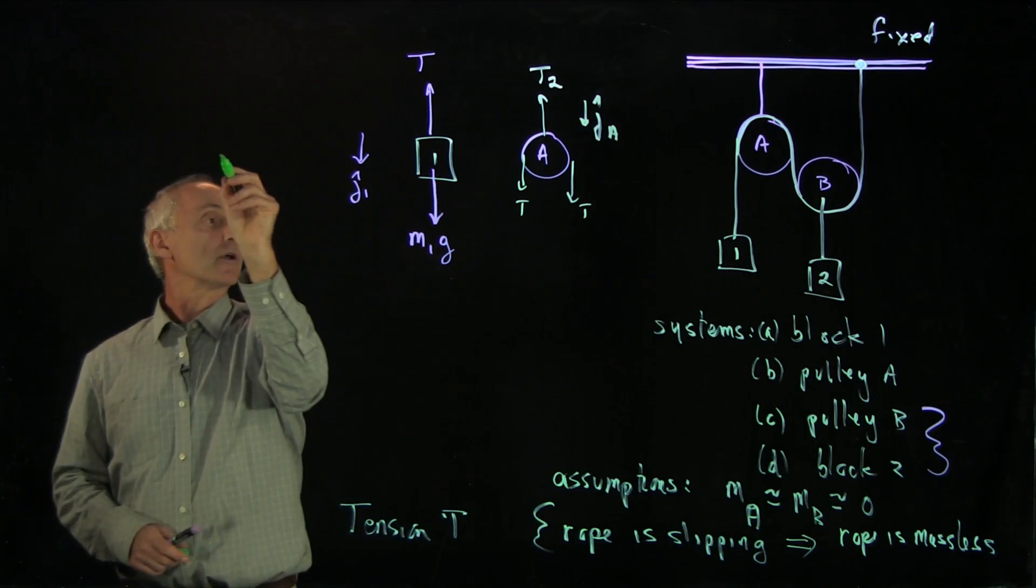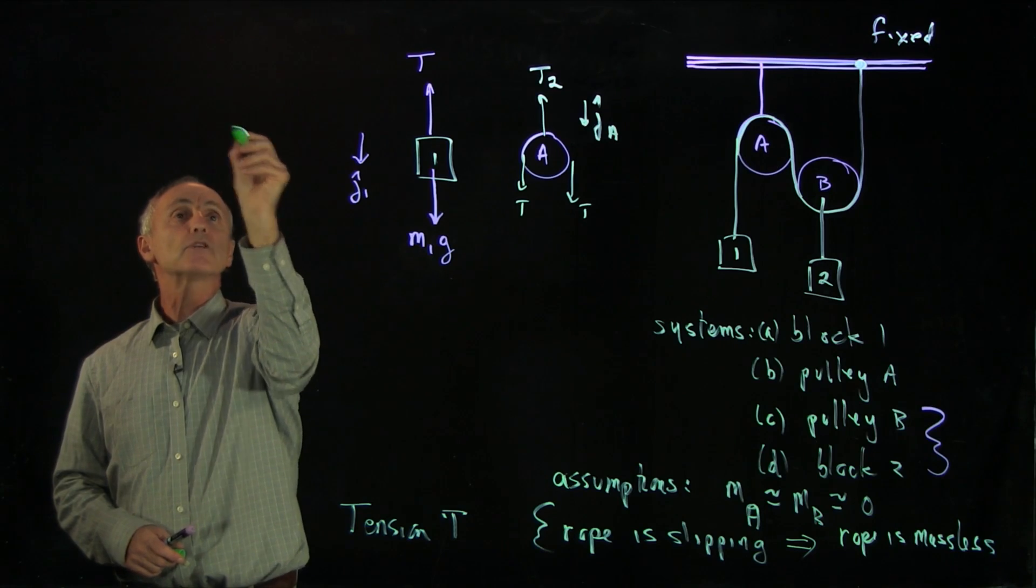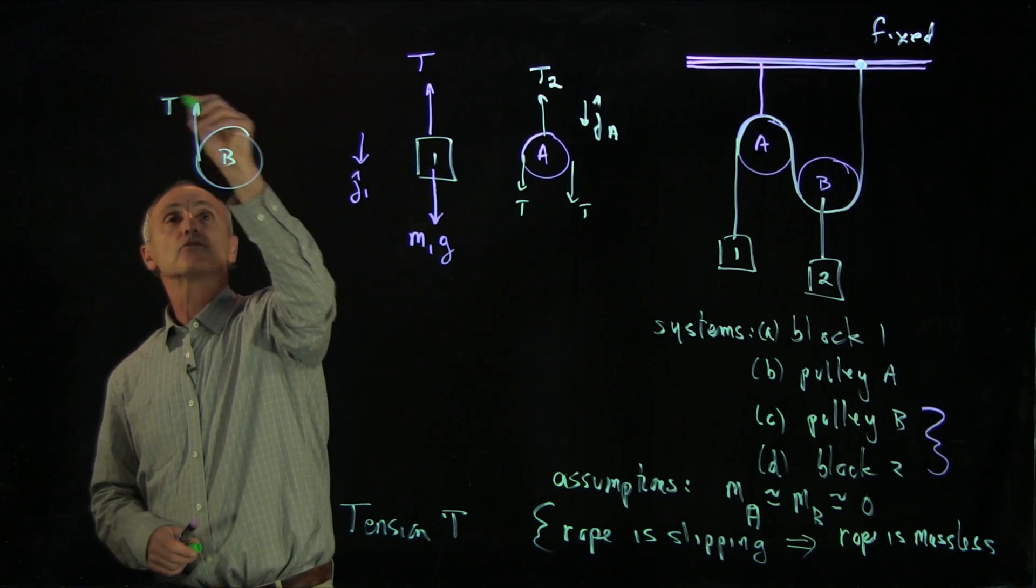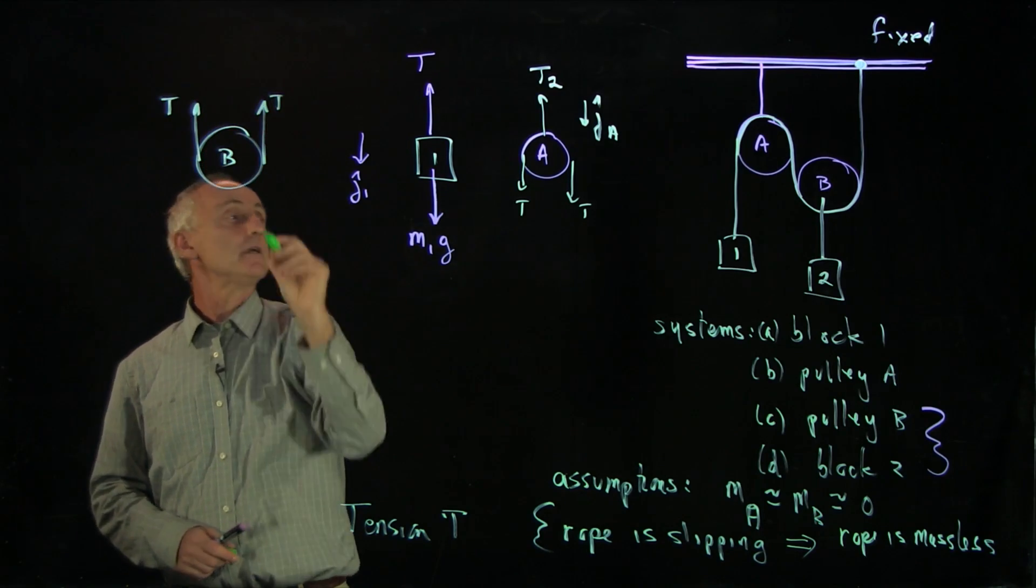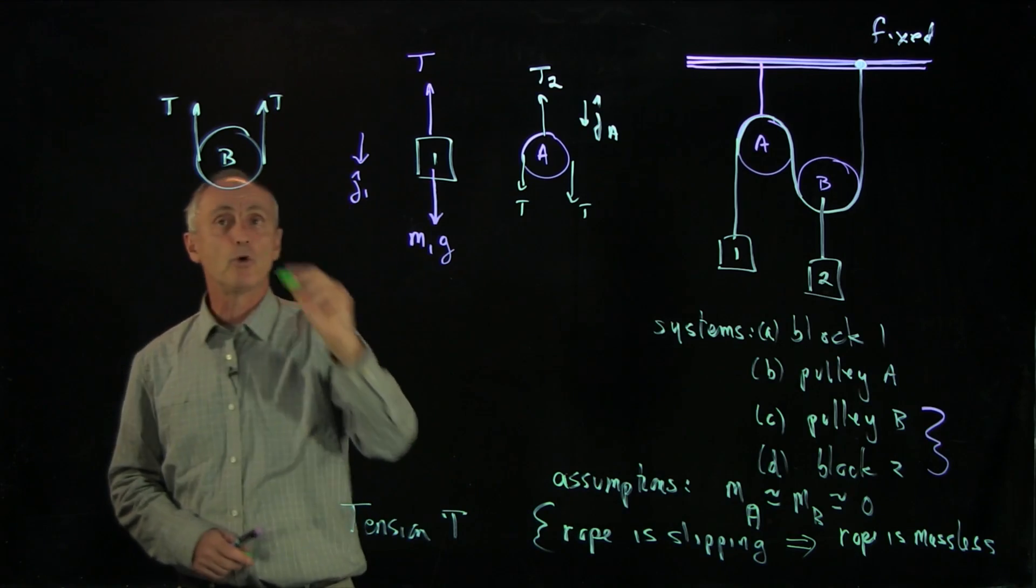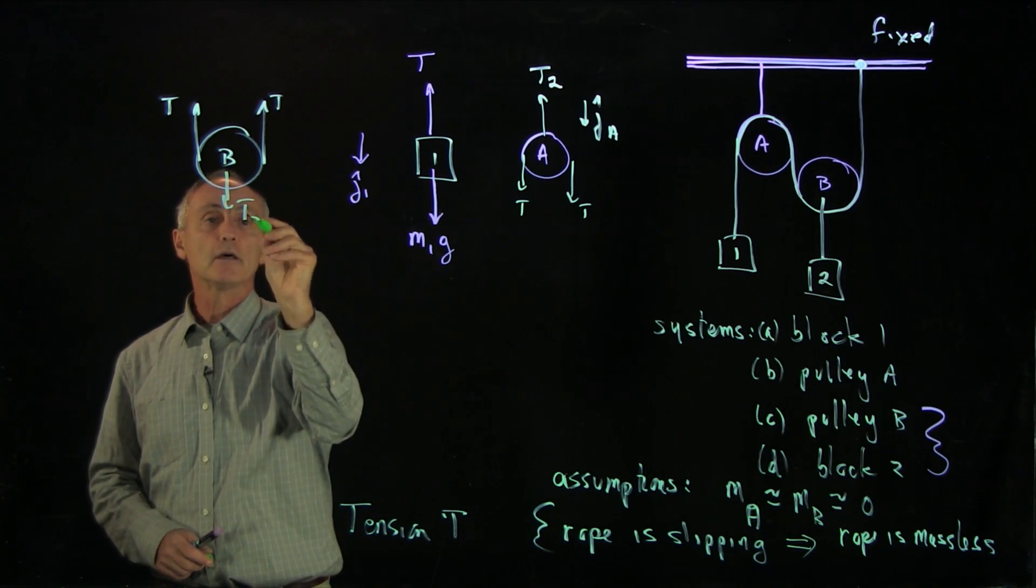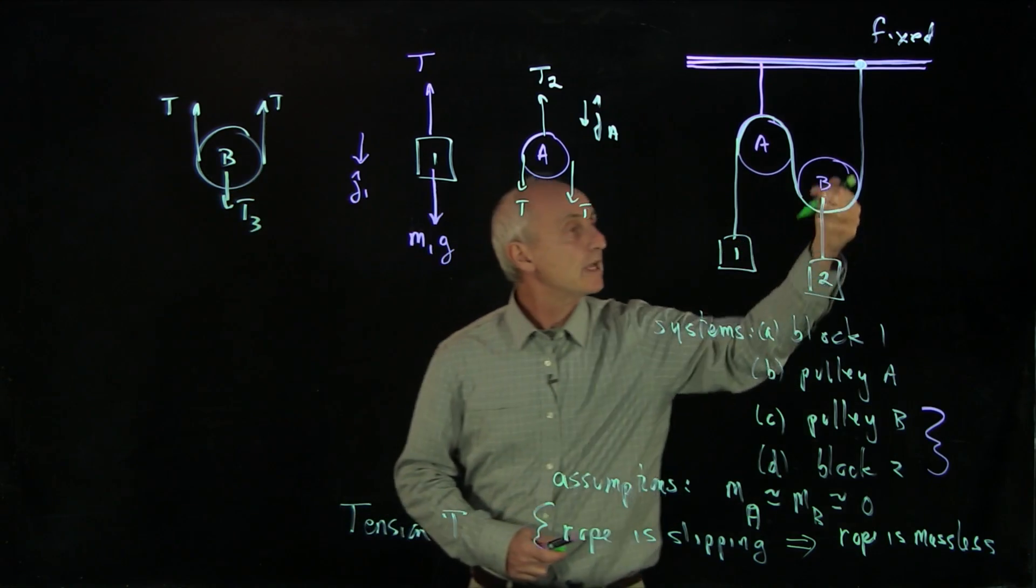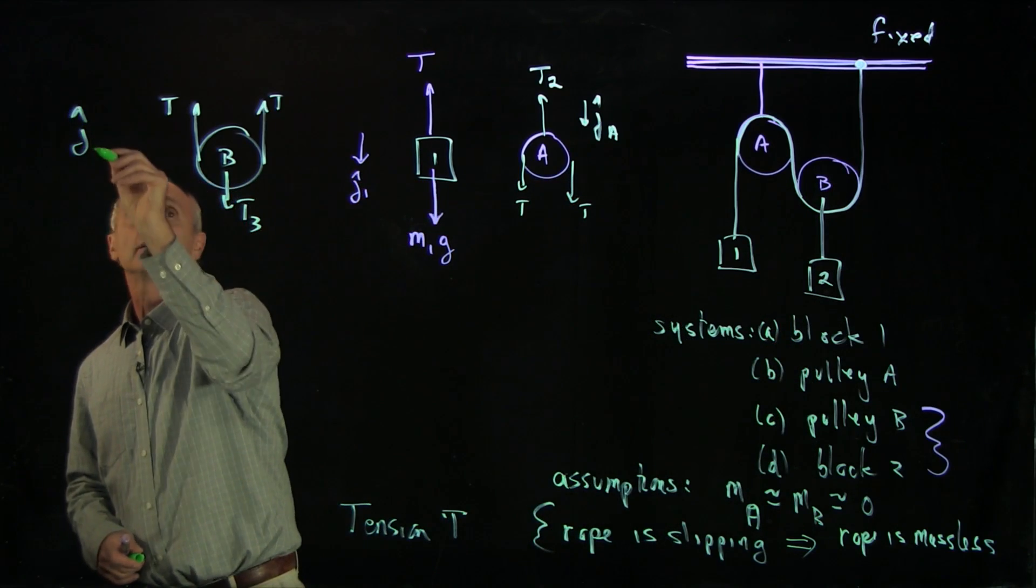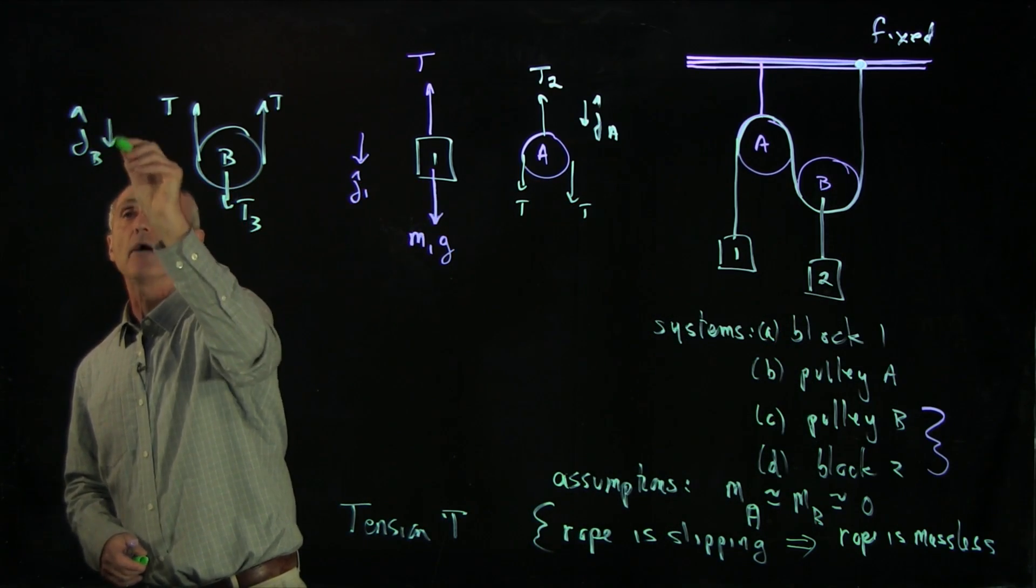For object 2, let's do pulley B first. What are the forces on pulley B? I have strings on both sides, T. Pulley B is massless, so I'm not putting gravitational force. And I'm pulling, this string is pulling B downwards, so that's T3. And again, we'll write j hat B downwards.